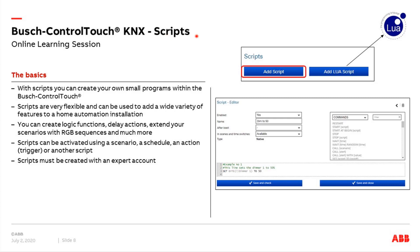The Control Touch supports two kinds of scripts. On one hand, we have the native scripts, which are essentially the Control Touch's own proprietary programming code. And we also have the Lua scripts, which is also a scripting language, but not Control Touch specific — it is used by many other manufacturers as well. Today we will talk mainly about the native scripts. If you need more information about Lua scripts, you can search online and find plenty of resources.